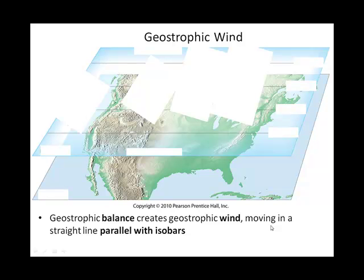I'm going to talk you through what creates these winds in the upper troposphere. The troposphere is that layer of the Earth's atmosphere closest to the Earth. I want to differentiate — we're talking about the flow of air aloft. I like this 3D figure here showing this air up in the upper atmosphere, not the air at the Earth's surface, which we'll talk about later.